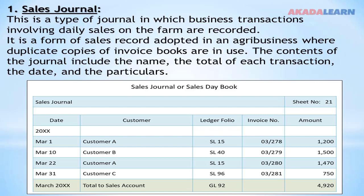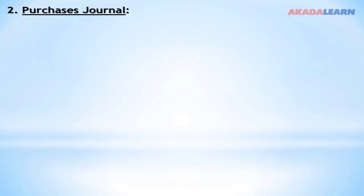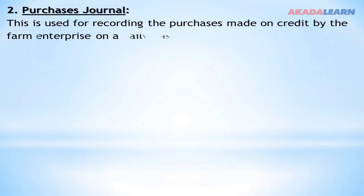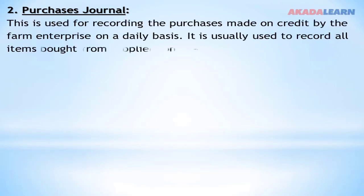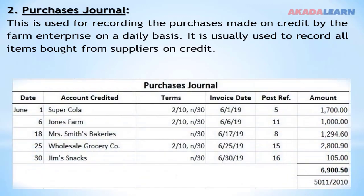The sales journal is also a form of sales record adopted in agribusiness where duplicated copies of invoice books are used. The content of the journal includes the name, total of each transaction, the date and the particulars. Now let's look at the purchase journal. The purchase journal is used for recording purchases made on credit by the farm enterprise on a daily basis, and is usually used to record all items bought from the supplier on credit.